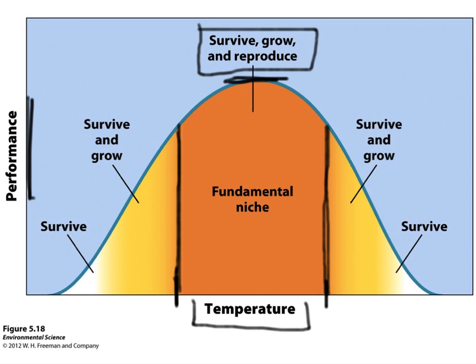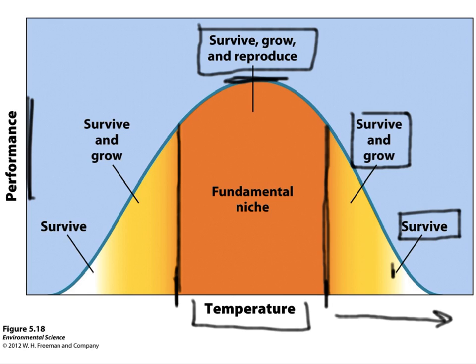If you go beyond that temperature range — if you go higher — at certain temperatures, that species may only be able to survive and grow, but not reproduce. Then, as you go to an even higher temperature, maybe that species is only able to survive, but not grow or reproduce. And eventually, it reaches a temperature at which it simply dies.